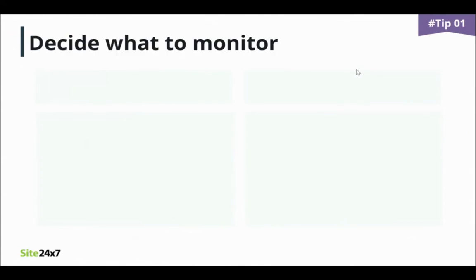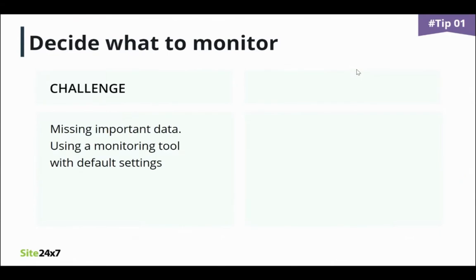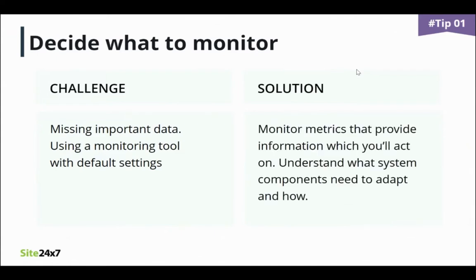Here goes the first tip: decide what to monitor — know what you want. Before you start looking at tools to help you monitor your infrastructure, think about what you want to monitor. You should only monitor metrics that are meaningful to you — metrics that provide information which you will act on. Don't just buy a monitoring tool and use its default settings. You're likely to miss the important data.